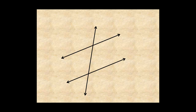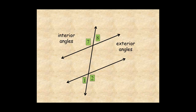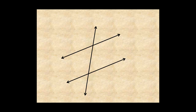Angles between the two lines are interior angles. Angles not between the two lines are exterior angles. Angles on different sides of the transversal are alternate angles.